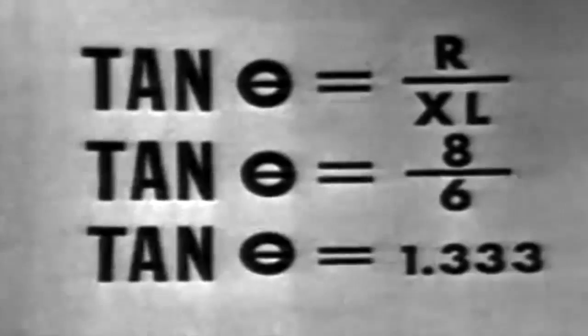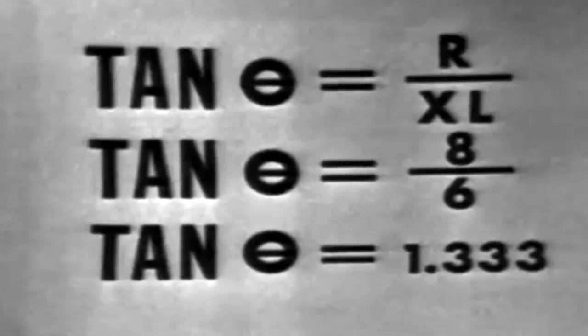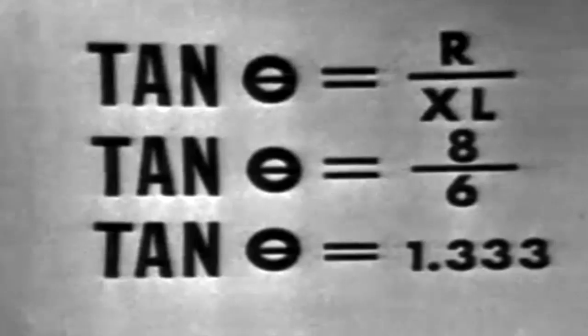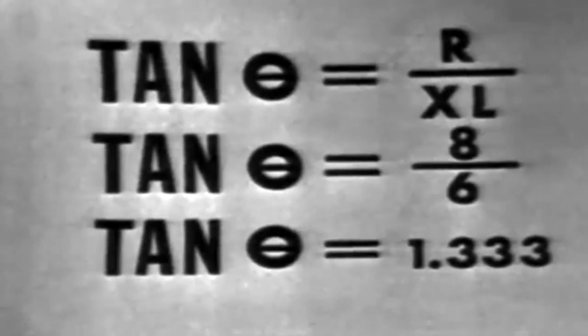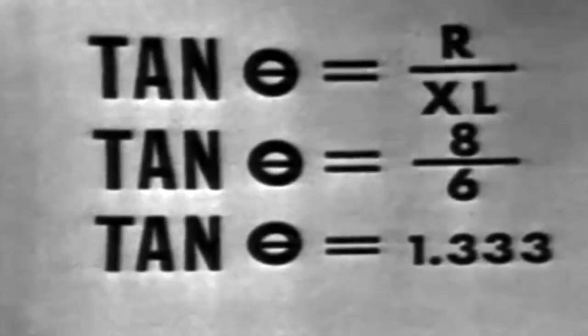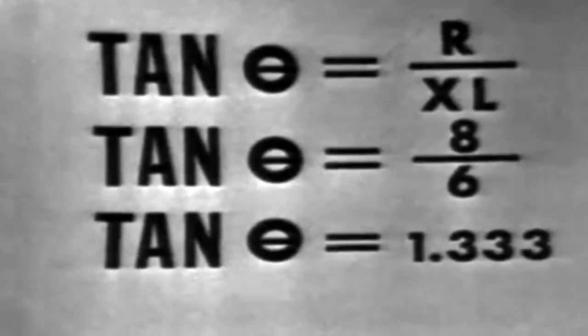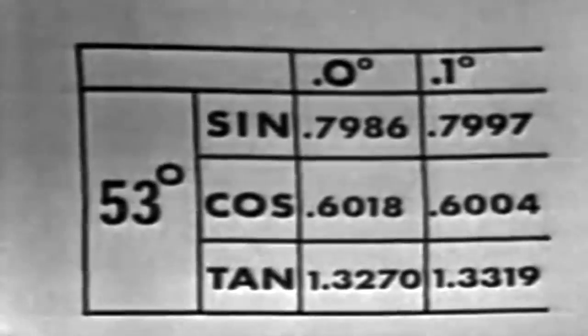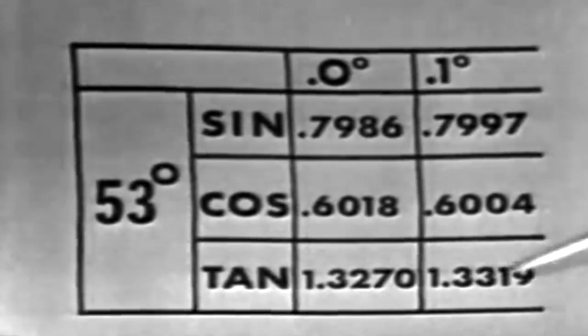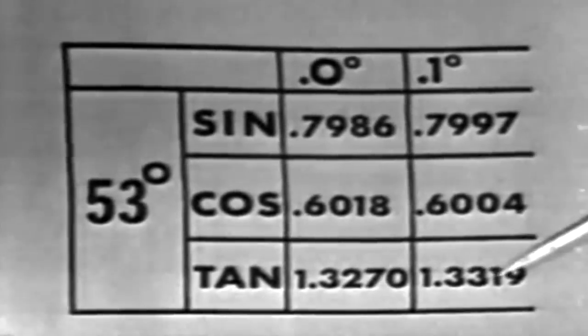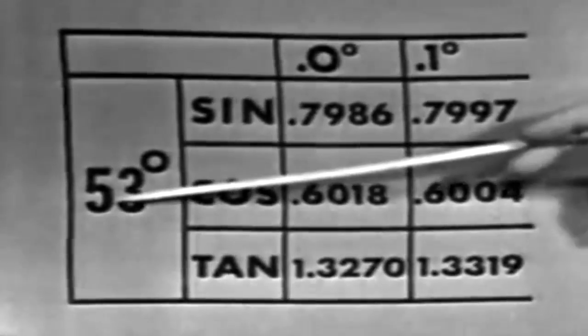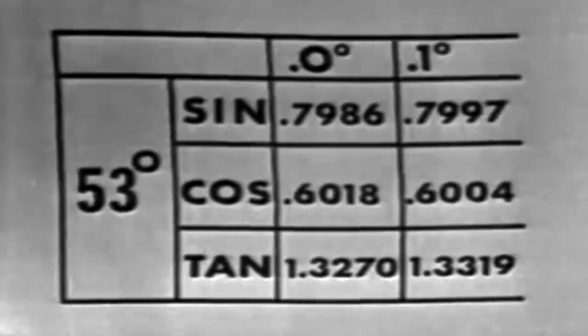In this circuit, the tangent is equal to R over XL, or 8 over 6. The tangent of angle theta is equal to 1.333. Going to the trig tables, angle theta could be found then by finding the tangent closest to 1.333, which in this case is 1.3319, and that would give us an angle of 53.1 degrees.